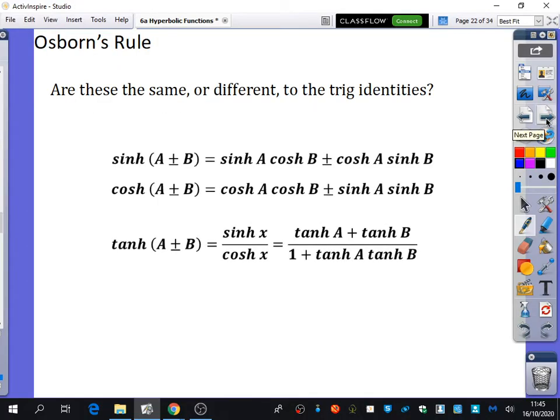So Osborn's rule is the way of us being able to find out, is for helping us to explore going from a trigonometric one, how we can quickly translate it into a hyperbolic one.